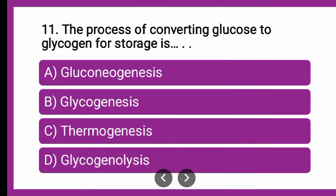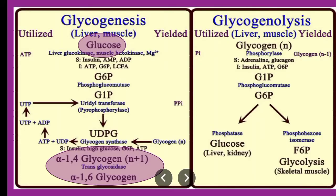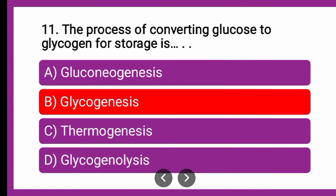Now here the glycogen is forming so it is definitely genesis. The last option is lysis, so definitely the answer is not that. The answer may be any of the three with the suffix genesis. Now since it is glycogen being formed, it is glycogenesis. The correct answer is glycogenesis wherein glucose is getting converted to glycogen for storage.